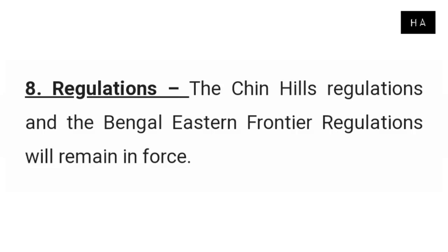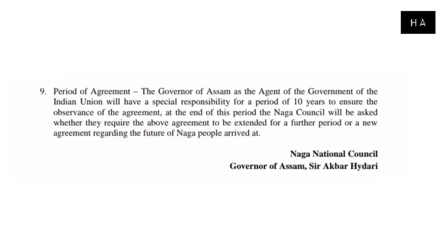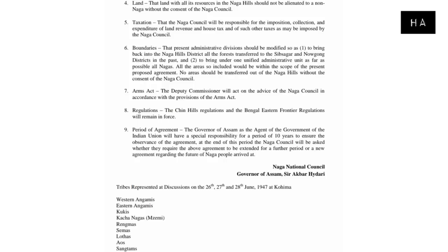Number 9 — Period of Agreement. How long would this agreement last? This agreement would last for 10 years. After 2 years, the agreement would be reviewed. After those 2 years were complete, the Naga people could decide whether to continue or form a new agreement.